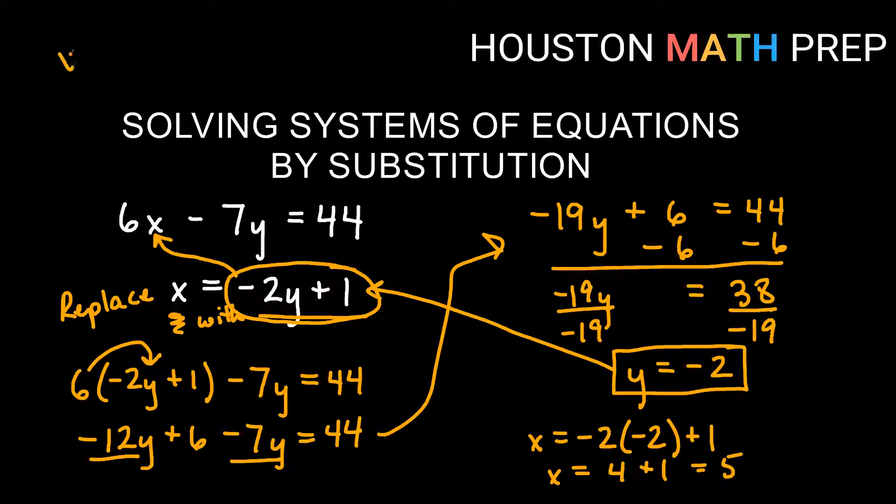So our answer for this one is that x equals 5 and y equals negative 2. Or if we prefer we can write it as a pair, 5 comma negative 2.